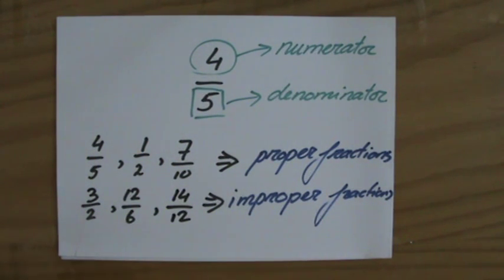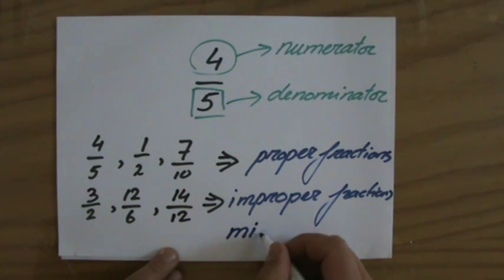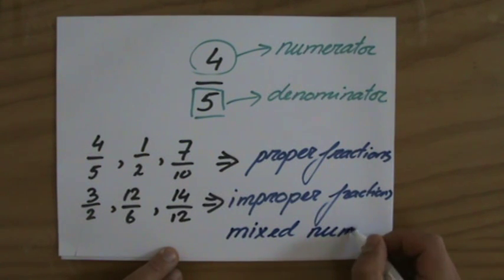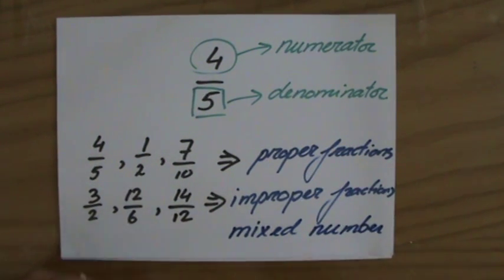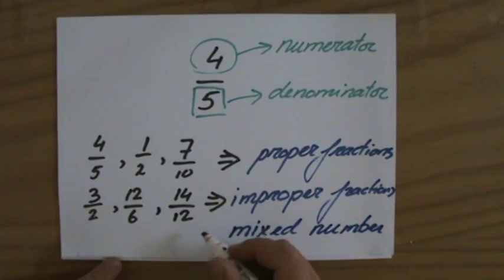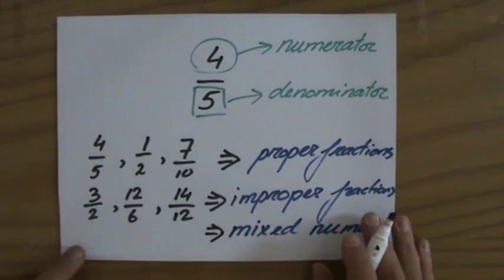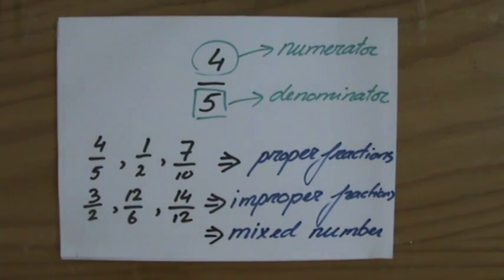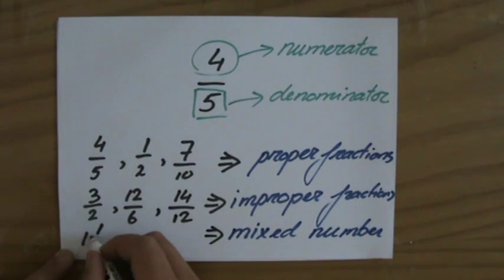An improper fraction, you need to turn that into a mixed number. That is the next term, into a mixed number. Later I'm going to show you exactly how to convert improper fractions to mixed numbers.